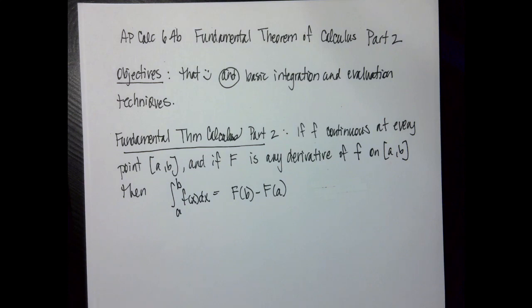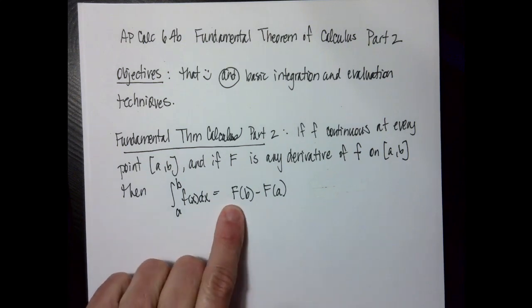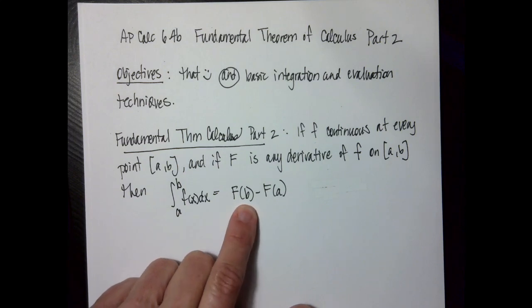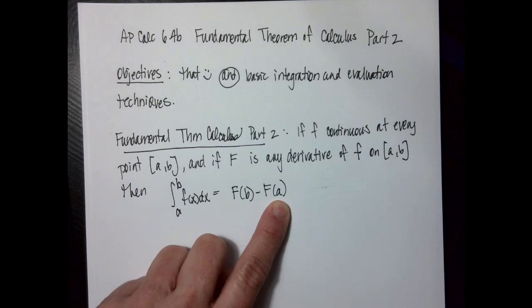We've actually kind of seen this before, but it's a little bit different than what we saw yesterday in that we're not taking the derivative of the integral. This is just a straight integral, called the fundamental theorem part two. It says if f is continuous at every point on a closed interval from a to b, and if f is any antiderivative on a to b, then when I integrate f(x) dx from a to b, I get f(b) minus f(a).